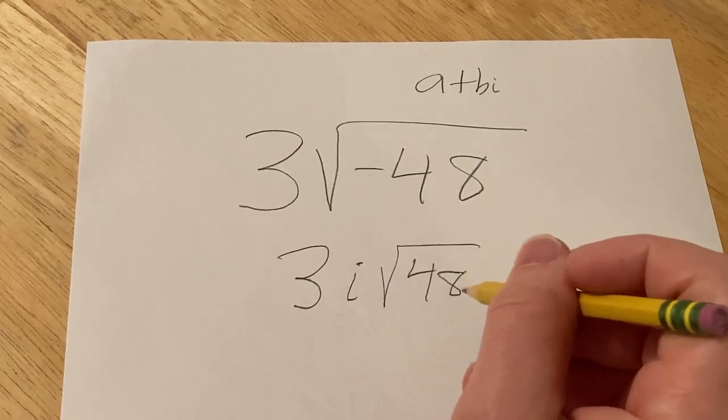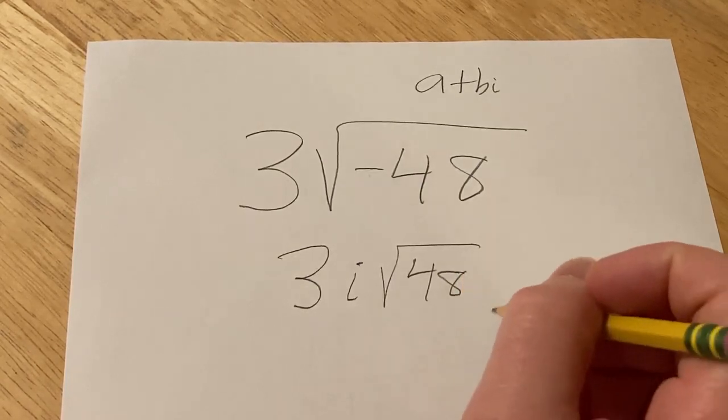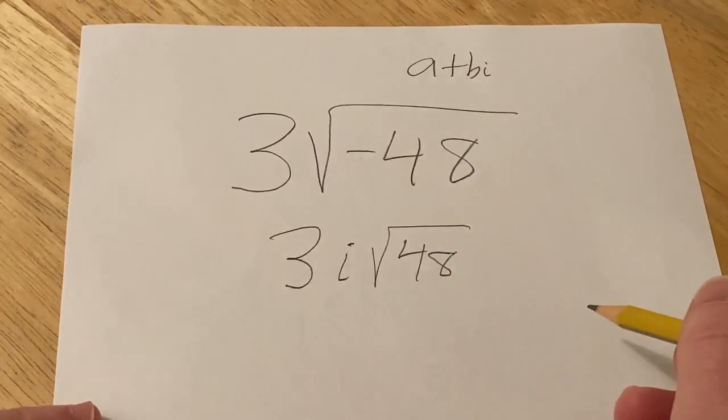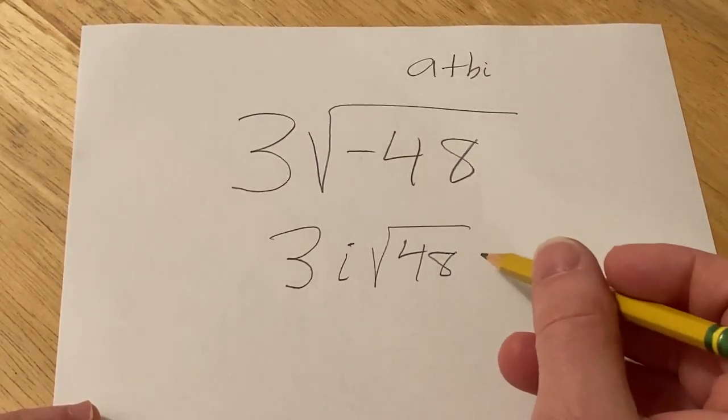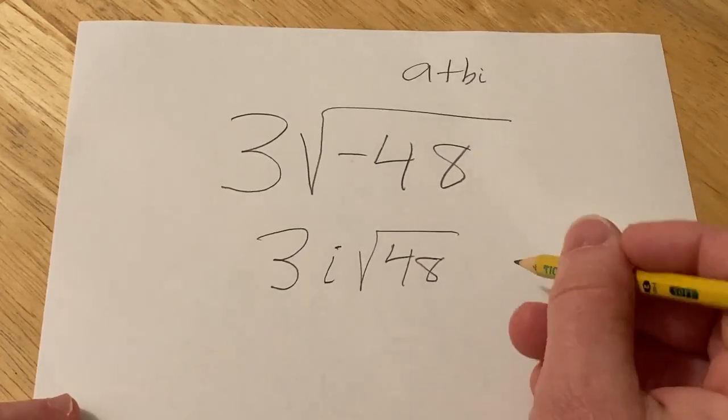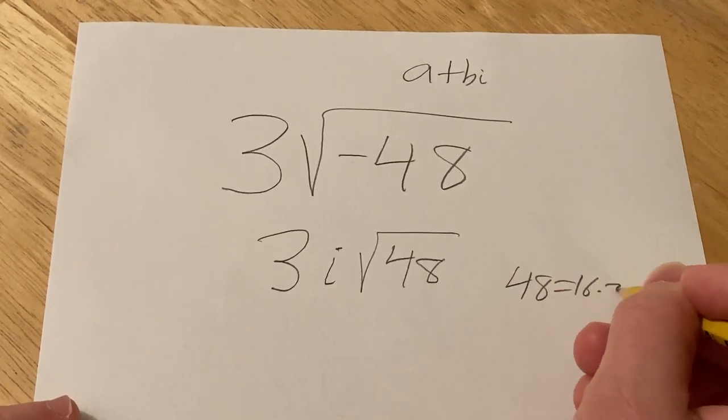Now you want to think about 48. How do you deal with that? Well think about what is the largest factor of 48 that's a perfect square. That means what's the largest factor of 48 so that when you take the square root of that factor you get a whole number. Well 48 is equal to 16 times 3.